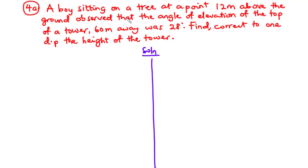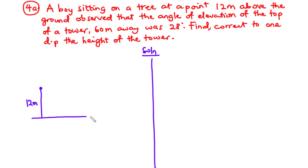A boy sitting on a tree at a point 12 meters above the ground. So let's assume that this is the position of the boy on top of the tree and the height of the tree is 12 meters above the leveled ground. So assuming this is the leveled ground, then the height of the tree is 12 meters and this is the position of the boy on top of the tree.